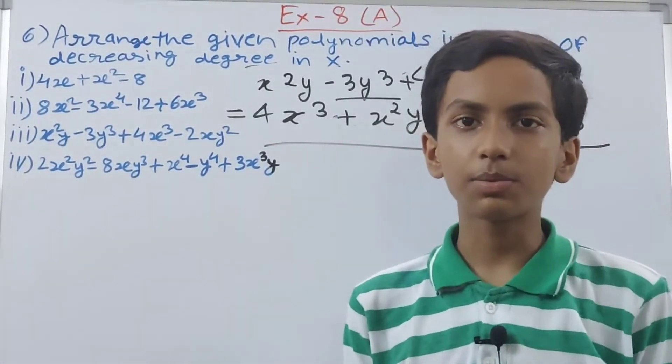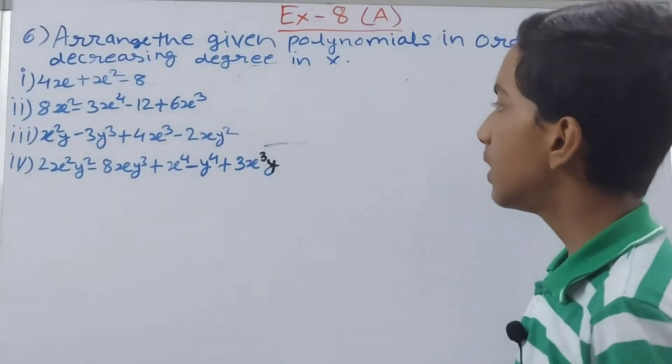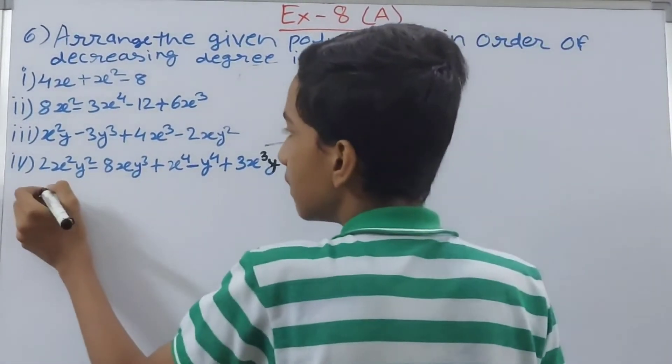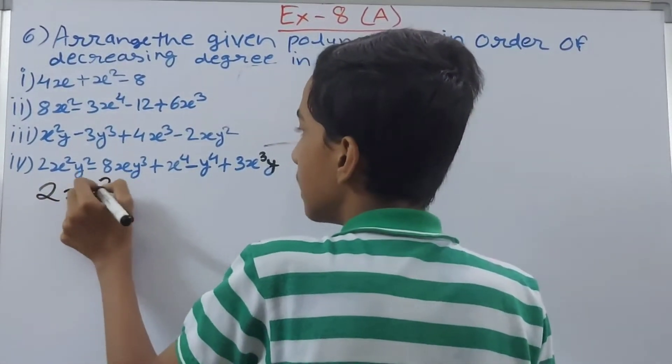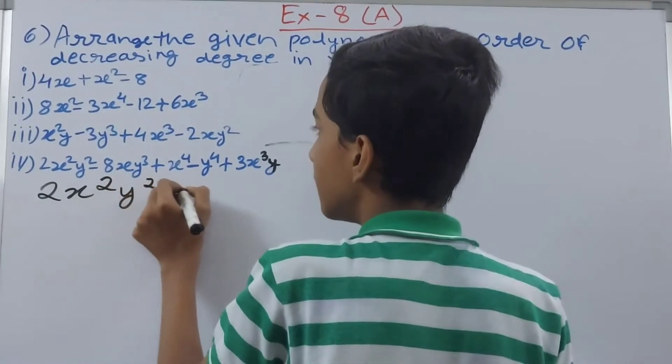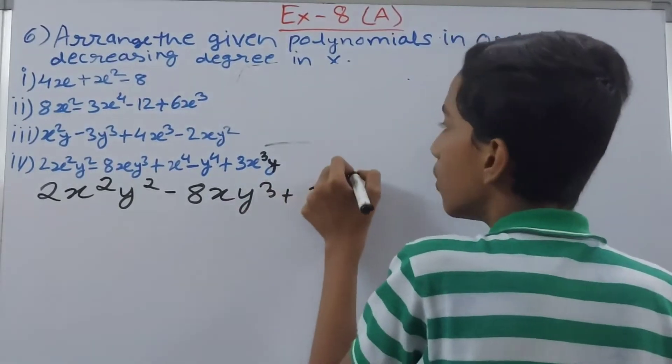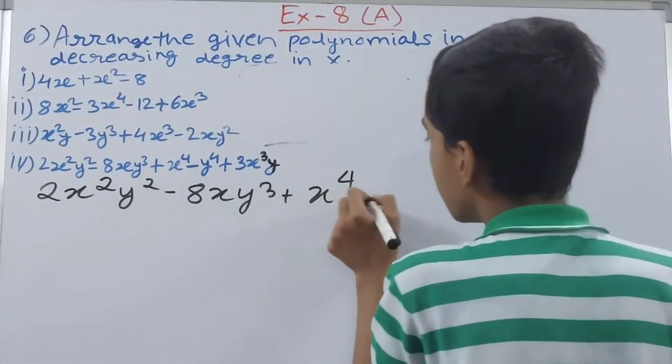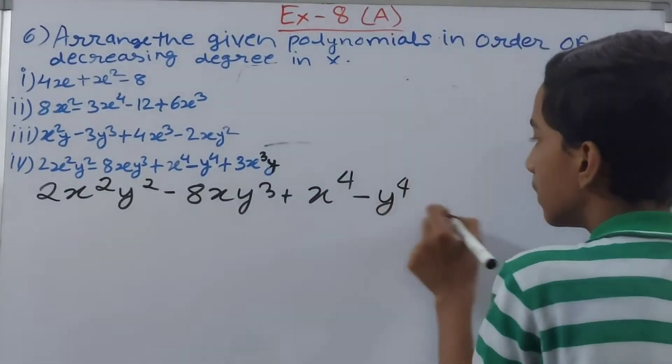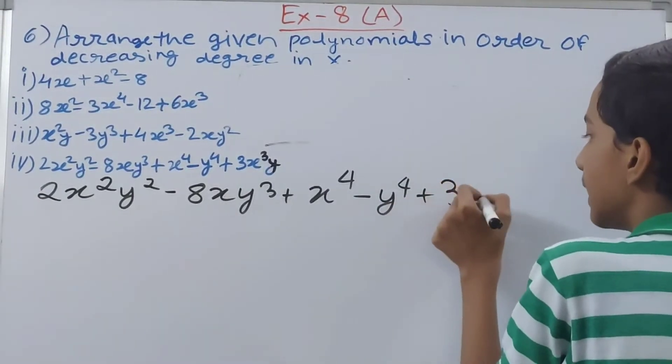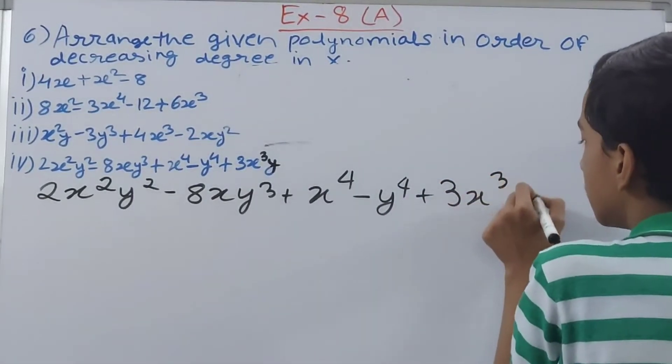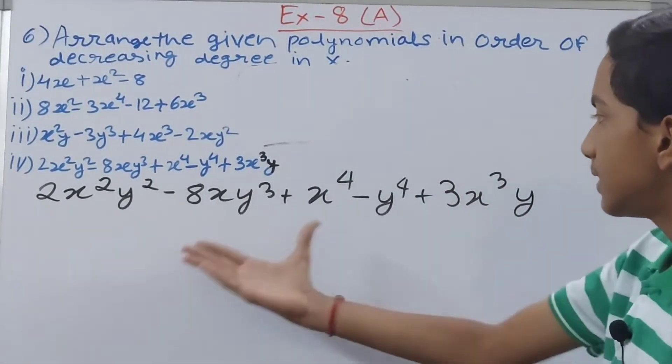Let us move on to the next part. Now on to the next one. So this is you can write it down here: 2x square y square minus 8xy cube plus 4x to the power 4 minus y to the power 4 plus 3x cube y.